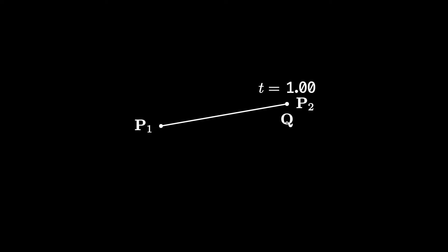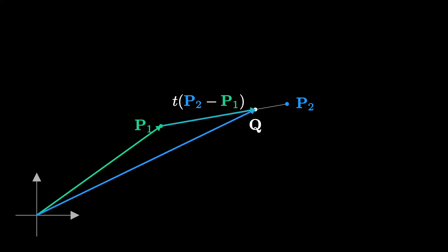The mathematical function to find the point Q is easy to deduce. First, we define a reference system and define P1 and P2 in this system. Then we define the vector P2 minus P1. Then we can use the t argument to locate the point Q. Using these definitions, we can deduce the function that defines the point Q.